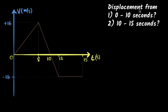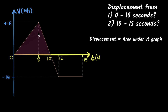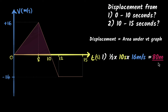This time we are asked to calculate the displacement from the velocity-time graph. Displacement is always the area under the velocity-time graph. To calculate displacement from zero to ten seconds, we calculate the area under that part of the graph, which is the area of a triangle: ½ × base × height = ½ × 10 × 16 = 80 meters. You can see from the units why displacement equals area under the VT graph — multiplying velocity by time cancels the seconds and leaves meters.